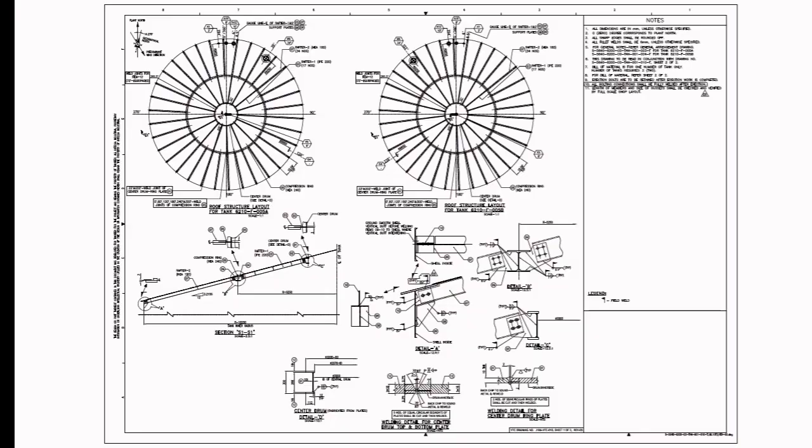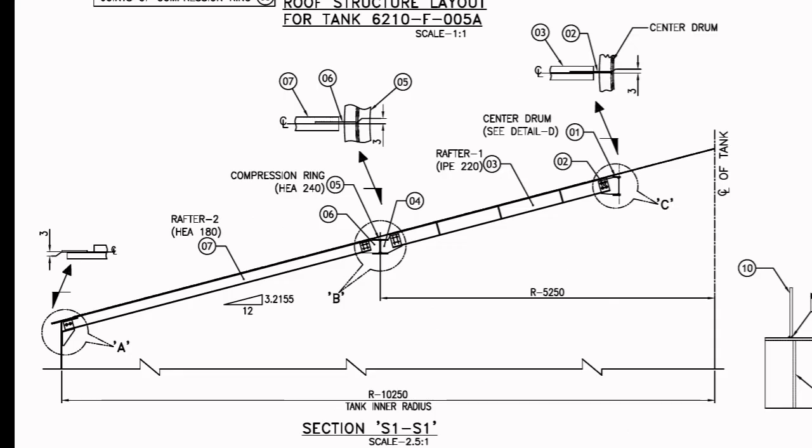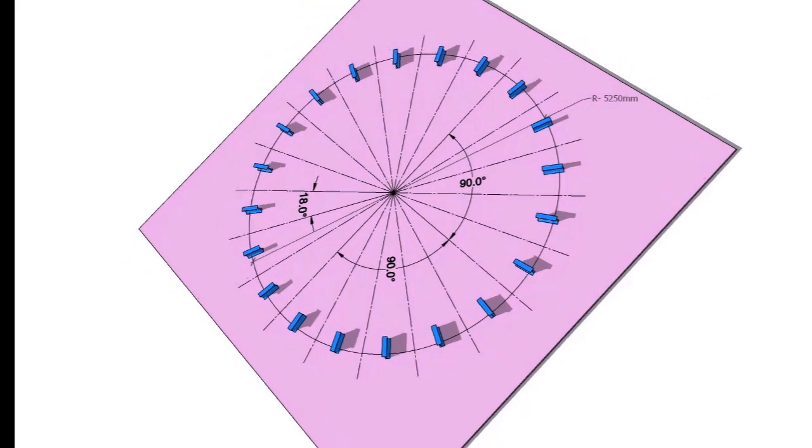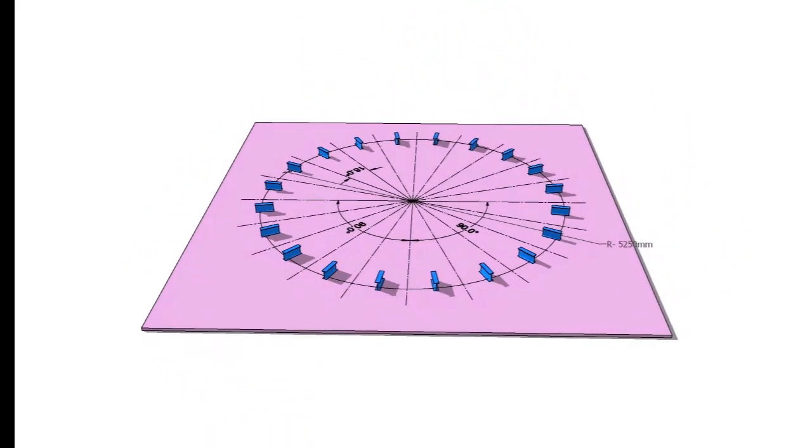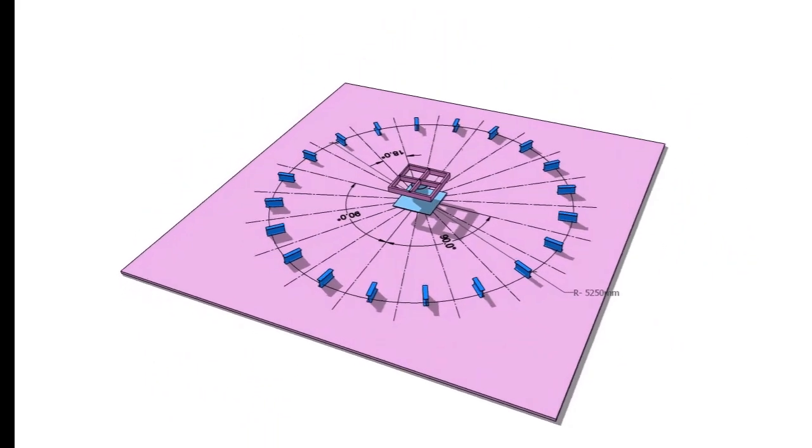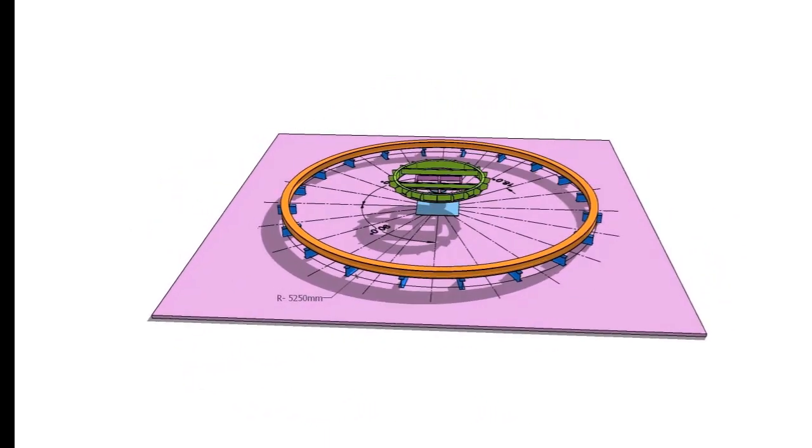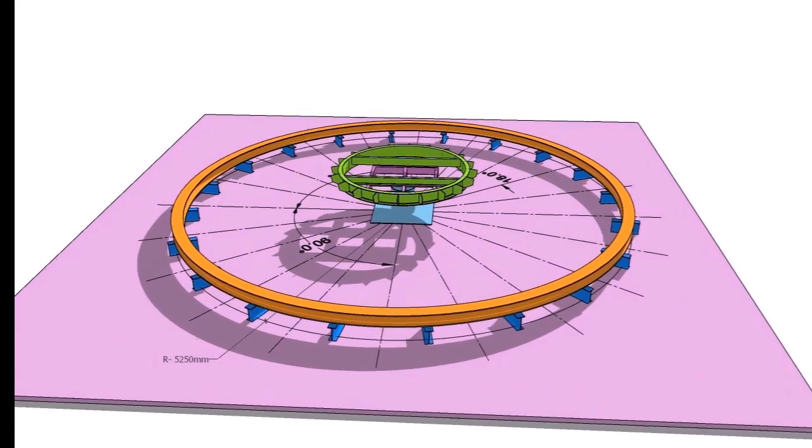Let me show you the arrangement for assembling the center drum and middle rafters. Note down the radius and height of the rafter from the drawing. Draw the layout, arrange temporary supports, and assemble the structure as shown.